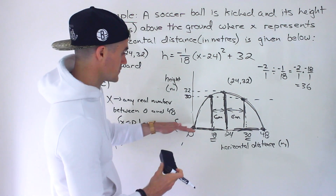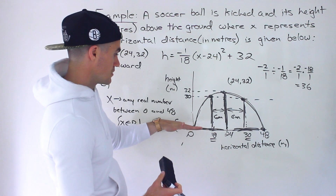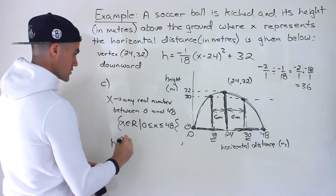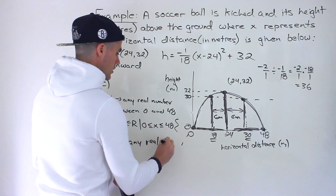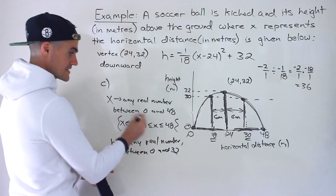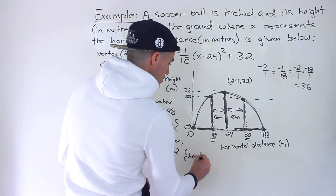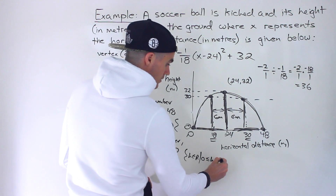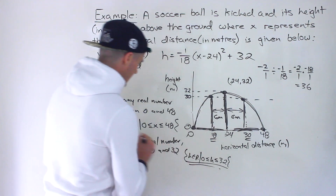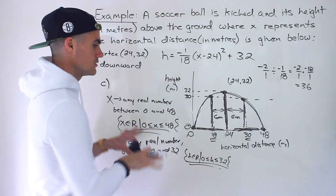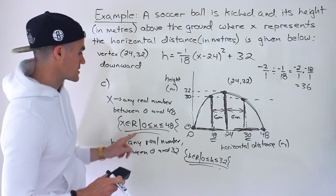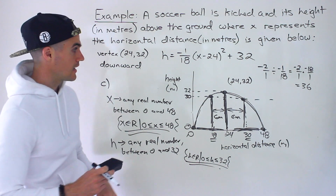For the h value, the height can't be negative, so the minimum is 0. The maximum height is 32. So h can be any real number between 0 and 32. In set notation, h is an element of real numbers where h is greater than or equal to 0 and less than or equal to 32. If your teacher isn't using set notation, don't worry — just describe that x ranges from 0 to 48 and h ranges from 0 to 32. Starting with the graph and getting as much detail as possible makes solving these questions much easier.